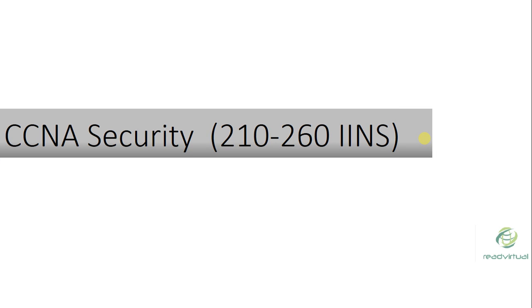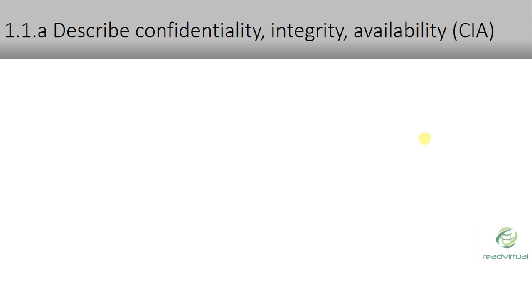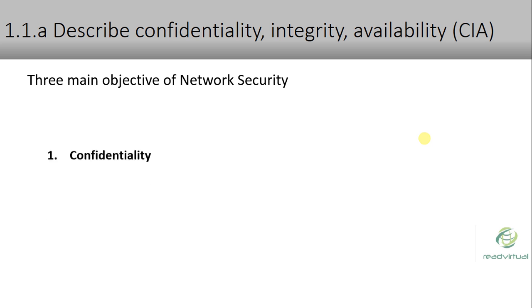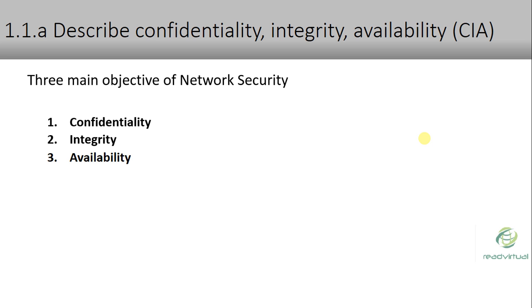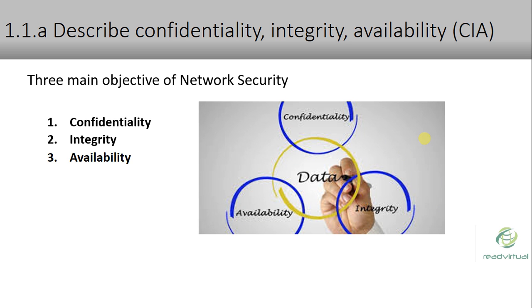Welcome to CCNA Security class. Today we will discuss the CCNA security exam blueprint. In this discussion, we will cover confidentiality, integrity, and availability. The network security cycle has three main concepts: confidentiality, integrity, and availability. These three concepts make up the network security cycle, and we will discuss each one in detail.